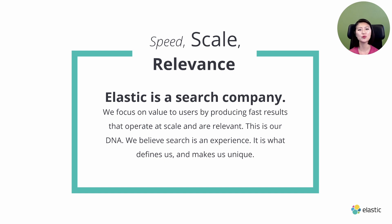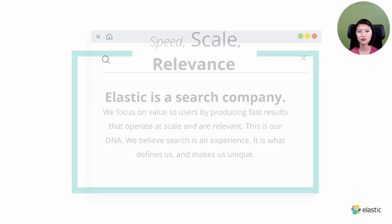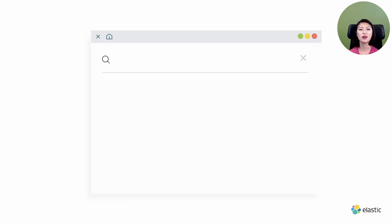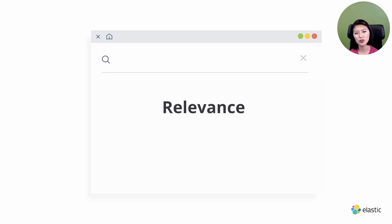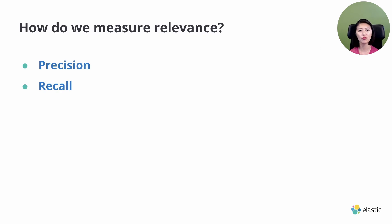In previous episodes, we talked about how Elasticsearch gets you fast search results at scale. Today we'll talk about the relevance aspect of search — more specifically, how we measure relevance when we search with Elasticsearch. We search for things on a daily basis, and as developers, search is our lifeline. Whether we're fixing a bug or building a feature, we go straight to the search bar, and it's really frustrating when you're not getting what you're looking for. That is what relevance is all about: when you search for something, you want results directly related to what you're searching for.